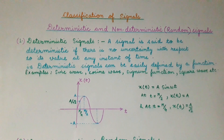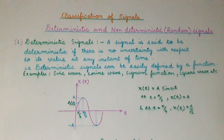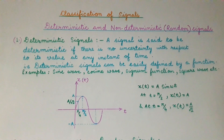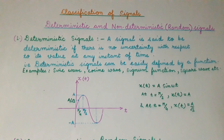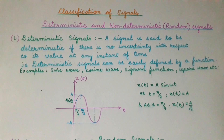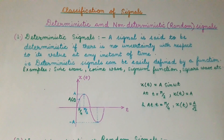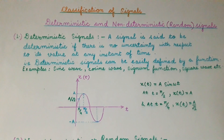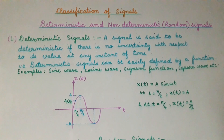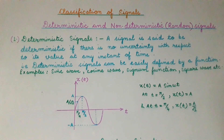Whenever we have any signal which has no uncertainty in its value at any instant of time, then we can say that the given signal is a deterministic signal. A deterministic signal can be easily defined by a function — that is, we can easily write a function for such types of signals.